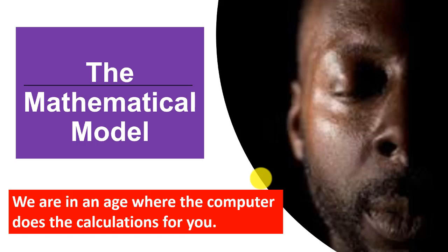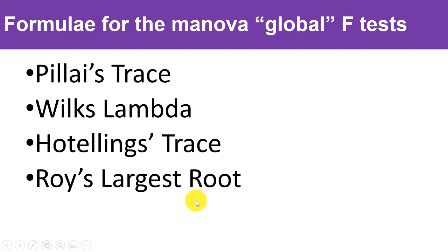Now let's look at the mathematical model — you can have half your eyes closed for this part. You're very lucky: when I was in school we had to write the program algorithms for the computer to do these calculations, but in your case the computer does everything for you. For the global multivariate F test, there are four statistics: Pillai's trace, Wilks' lambda, Hotelling's trace, and Roy's largest root.